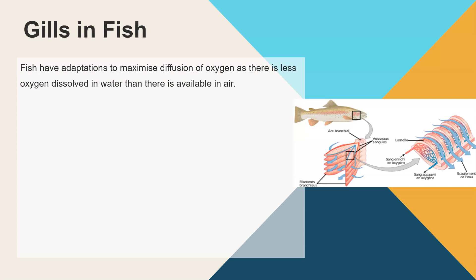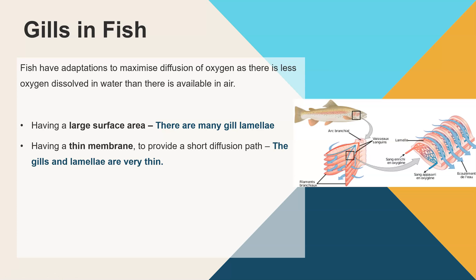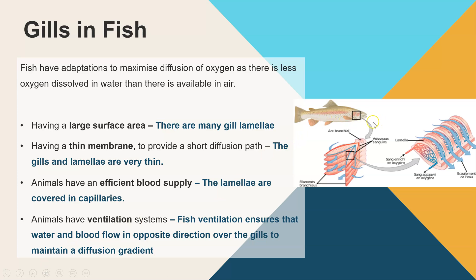Fish also exchange gases, but because they're underwater their adaptations must account for the fact that there is much less oxygen dissolved in water than in air. They have a large surface area, but instead of alveoli they have gills, and on top of those gills is a thin membrane called a lamellae where gases are exchanged. The lamellae are very thin to provide a short diffusion distance, and each has a network of capillaries. For ventilation, fish open their mouths so water flows in and out through the sides of their head over the gills. Crucially, the water flows over the gills in the opposite direction to blood flowing through the capillaries, which helps maintain the concentration gradient across the whole lamellae.